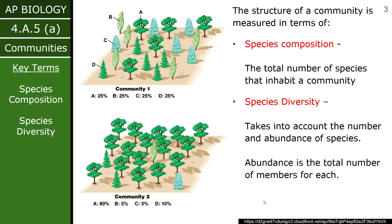Those two terms are species composition and species diversity. Species composition is the total number of species within a community. So if there were four different species, that is the composition. In this top community, we can see that there are four different types of trees — I've circled them here. So the species composition is four, because there are four unique trees.